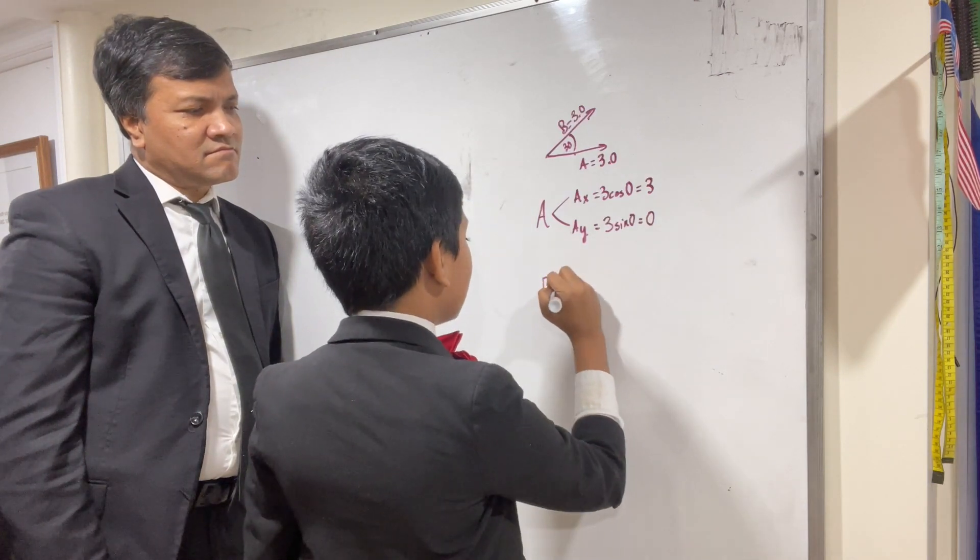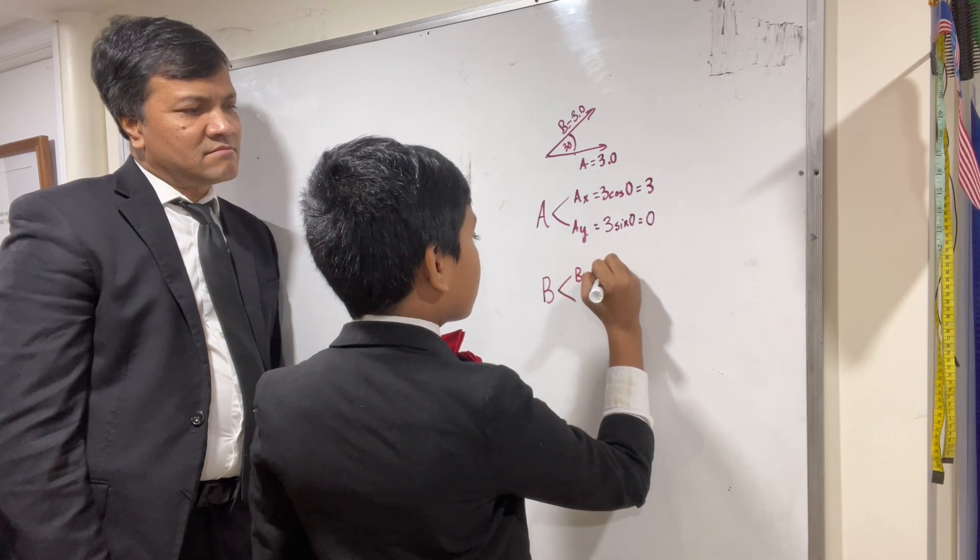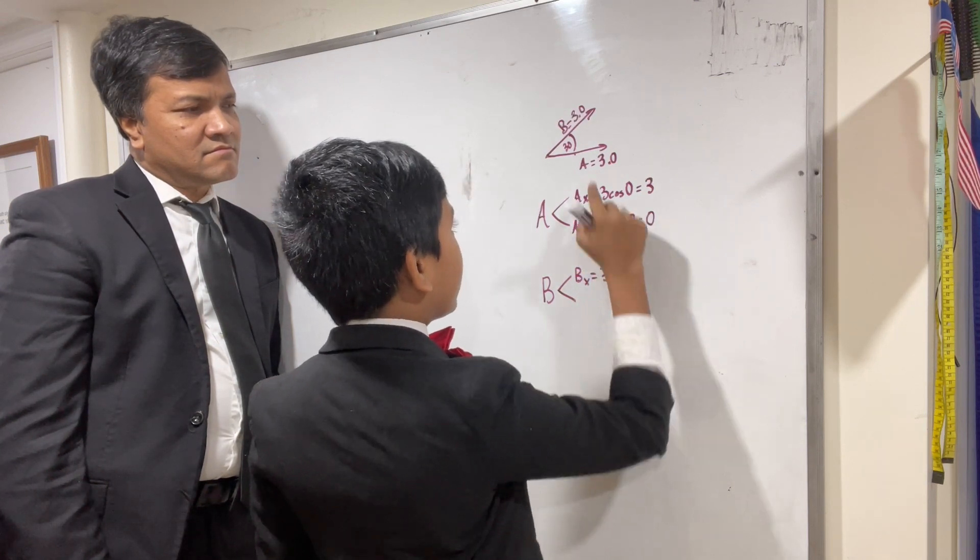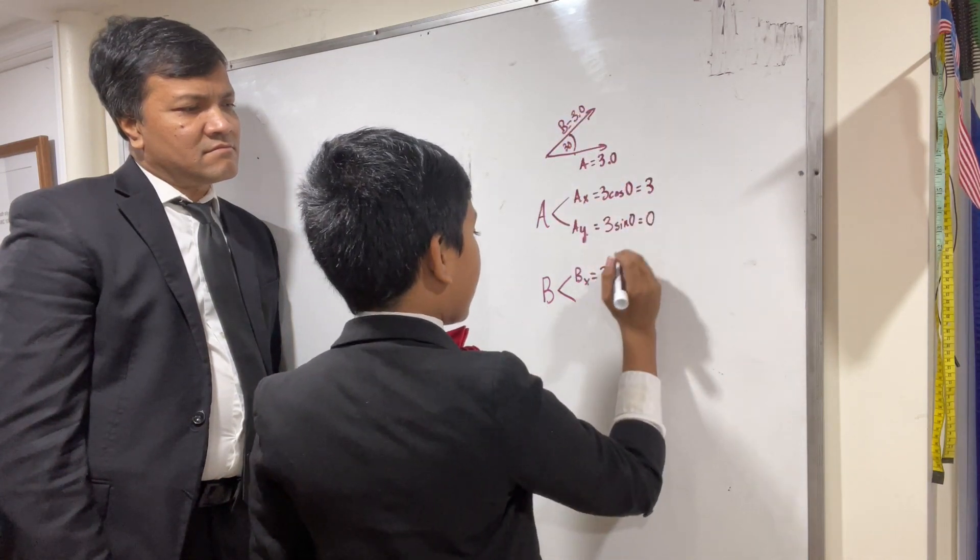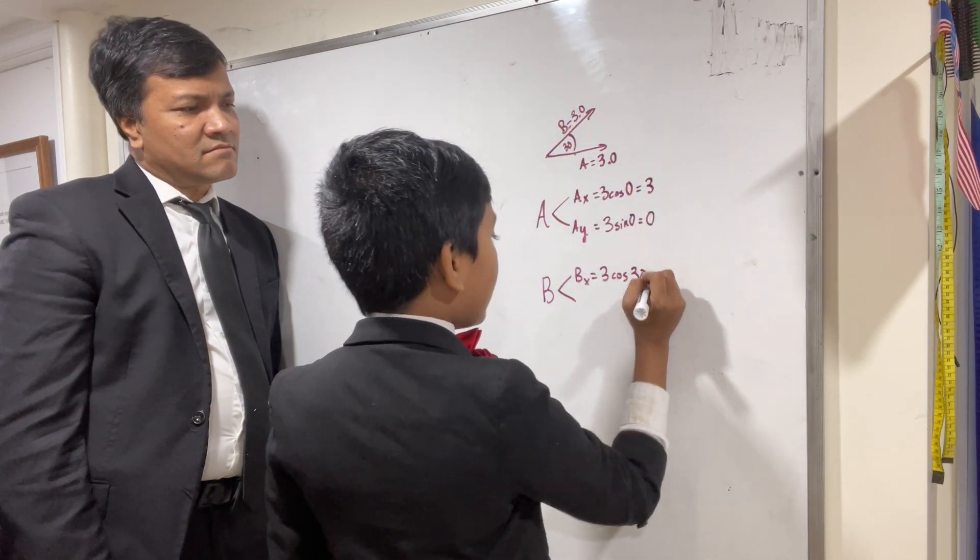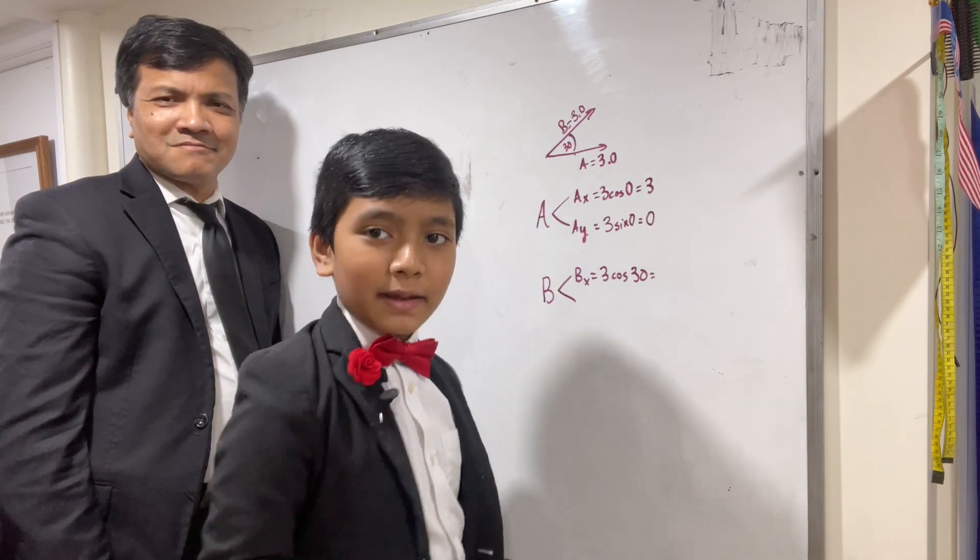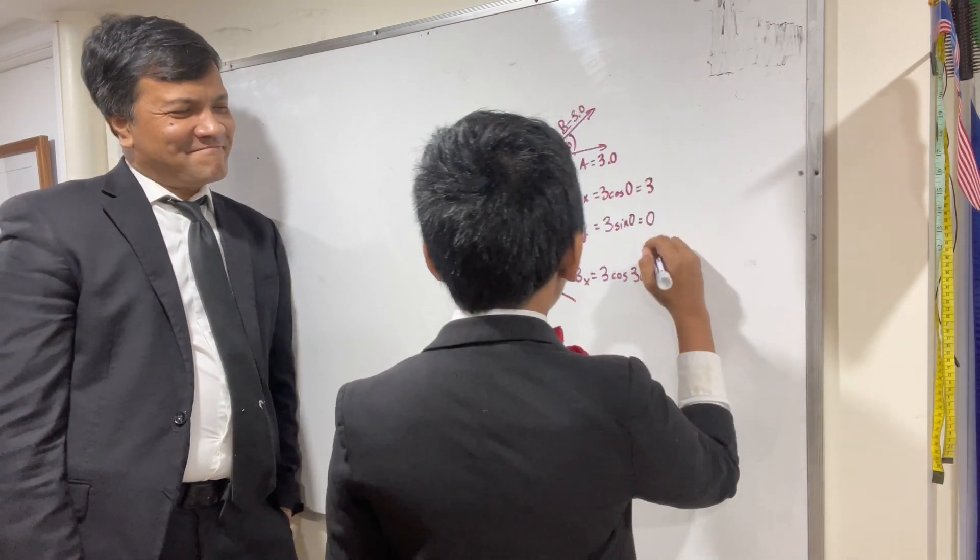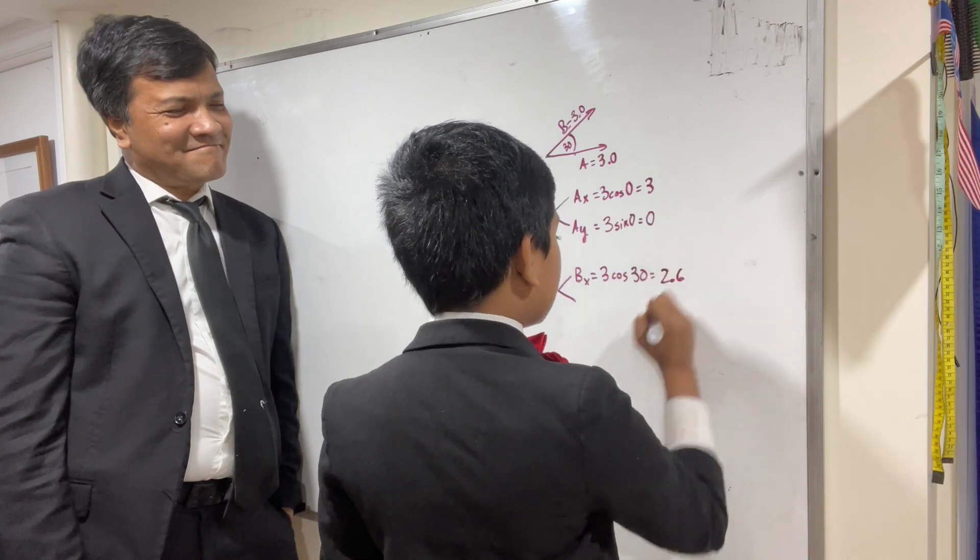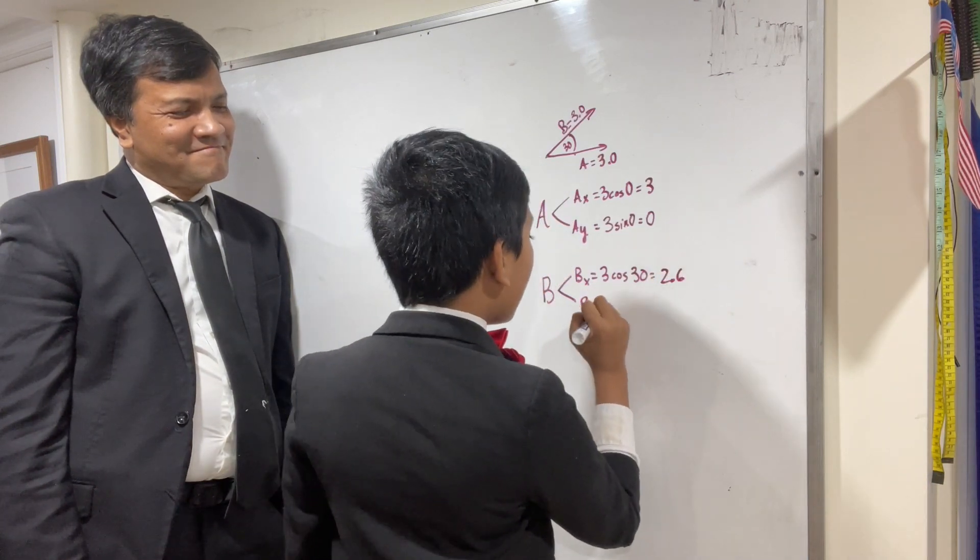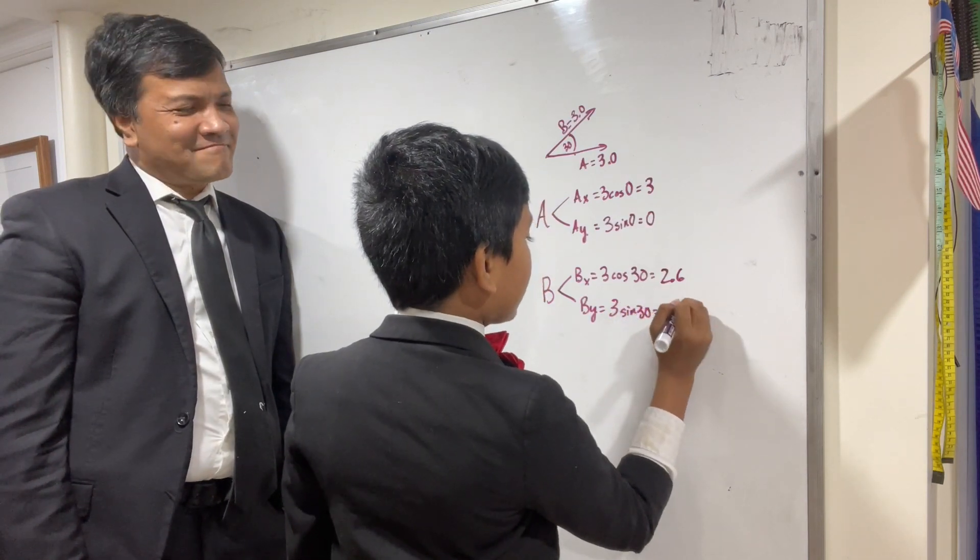And then we have B. So B would be Bx, which is going to be three cosine, because the x component is adjacent to the angle 30. And since cosine 30 is about 0.866, 3 times 0.866 would be 2.6. And then we have By, which is 3 sine 30. And I'm pretty sure that's 1 half, giving us 1.5.